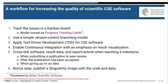What we worked on is figuring out a workflow that increases the quality of scientific software in this environment. We came up with five steps — six counting the bonus step — that from our perspective improve the quality of scientific software without causing huge overhead in time or resources. We track our projects using Kanban boards, and recently adopted progress tracking cards developed by Better Scientific Software, which is really great. We use a very simple version control branching model and apply test-driven development for computational science and engineering software.